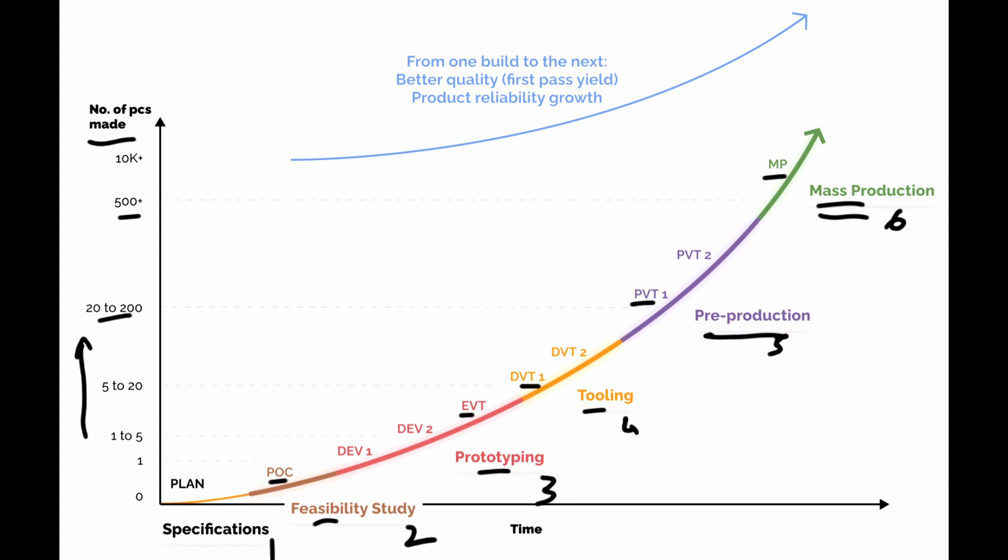This process typically is for products that would be made in the hundreds of thousands of pieces, hopefully, right? So it's very important to be proactive and to do all this work. And really the objective is that as I wrote here, from one belt to the next, you have better quality and also better product reliability. That's the key.